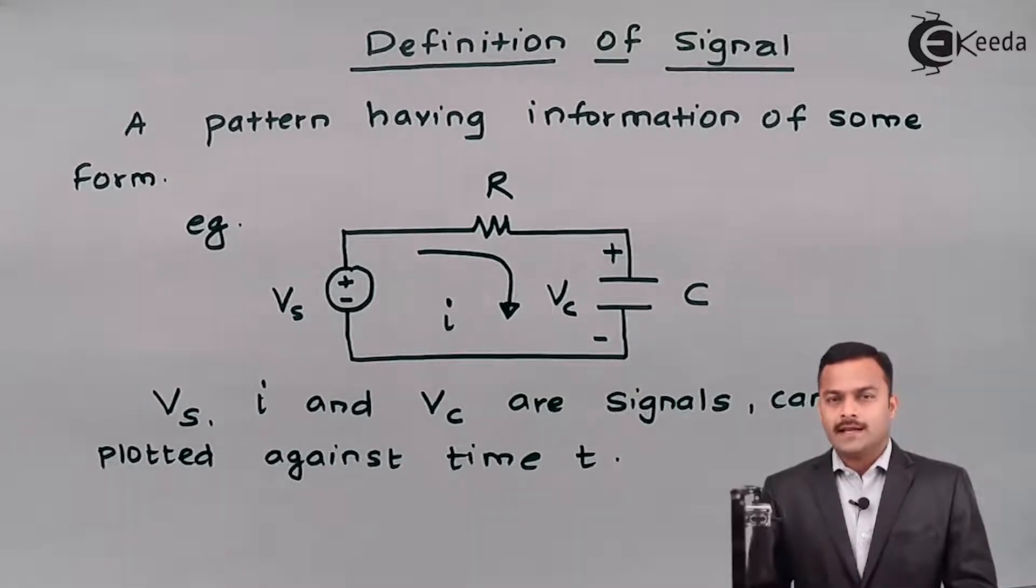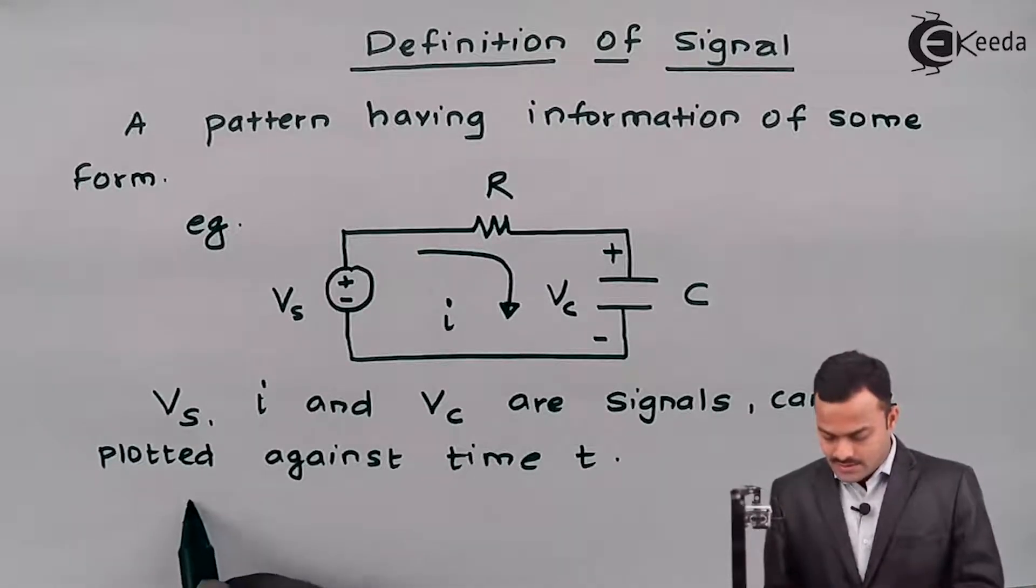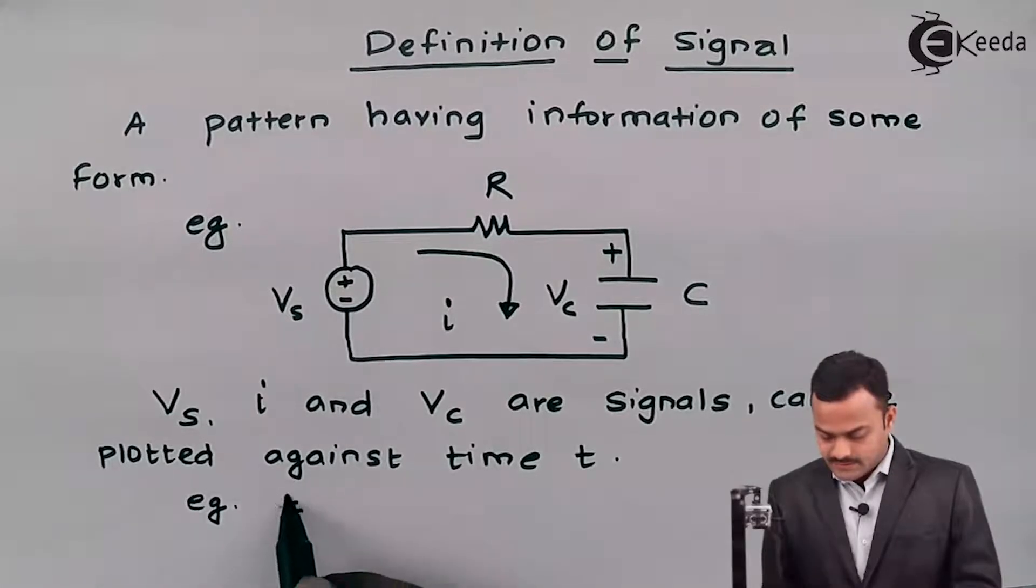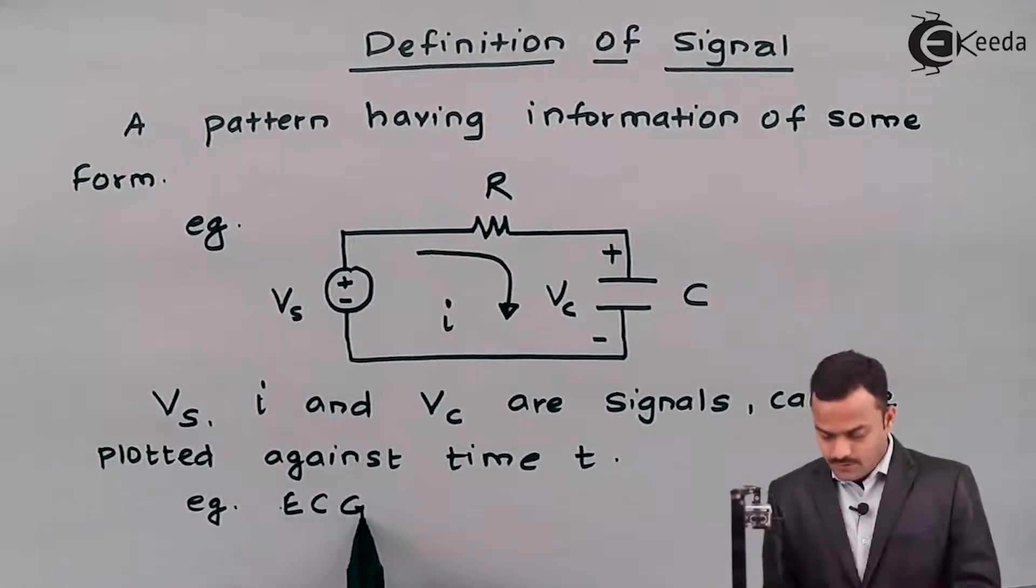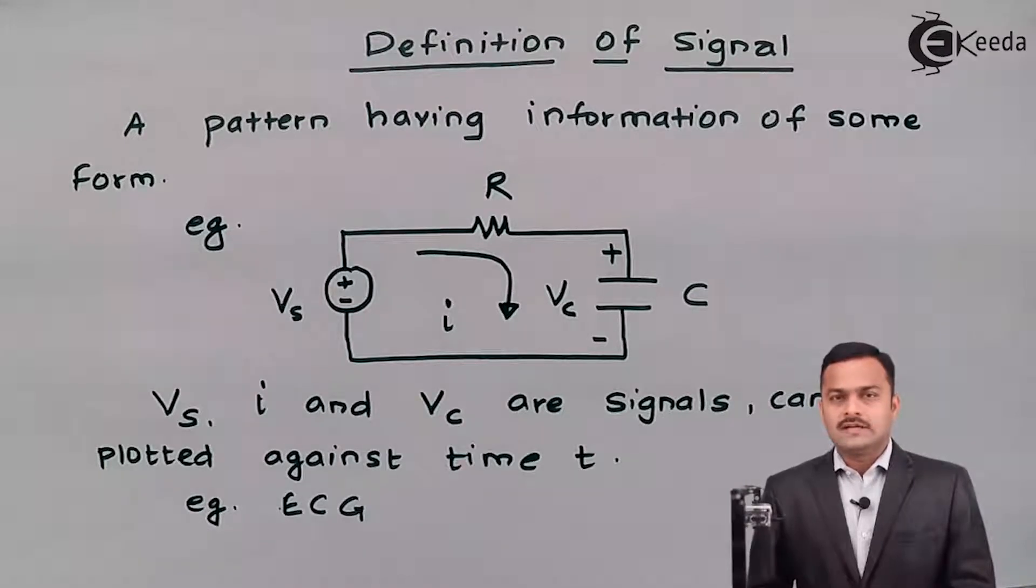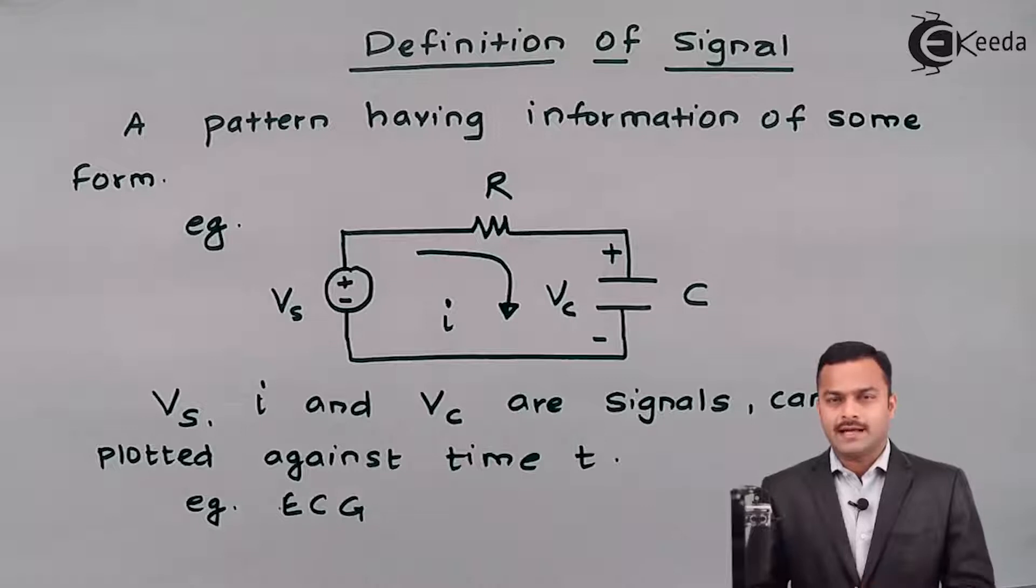For example, electrocardiogram ECG is once again a plot of our heartbeat against some parameter or you can say time t, so that can also be a signal. So in a biological system I can consider ECG is an example of a signal.